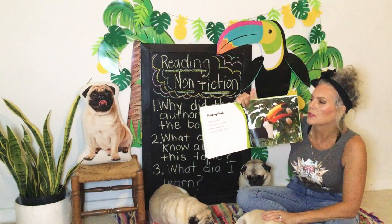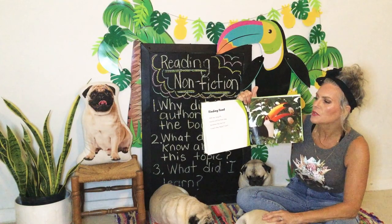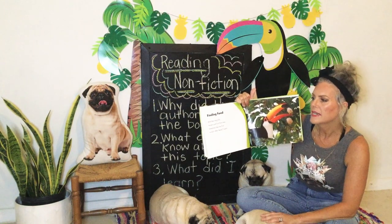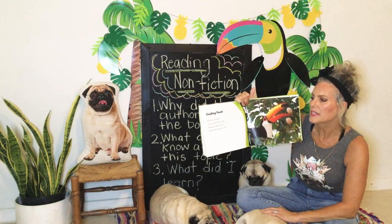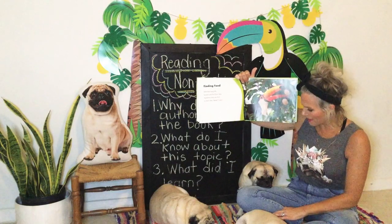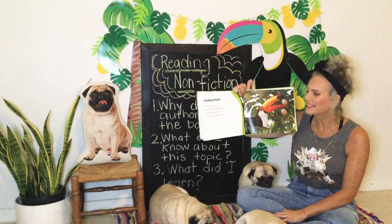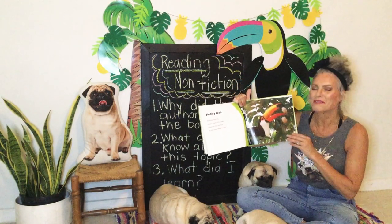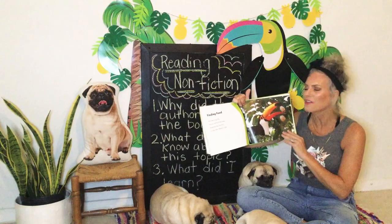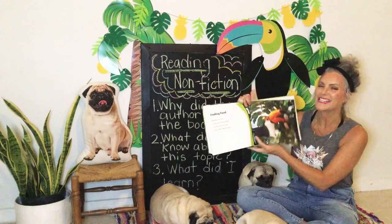Finding Food. With their long bills, toucans pick fruit from trees. Sometimes they toss fruit to each other! I didn't know that about a toucan — that they toss fruit to one another. That's interesting!